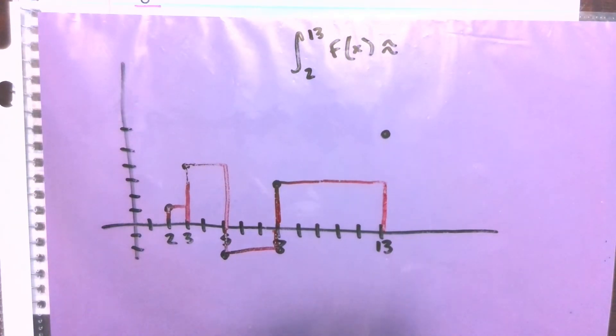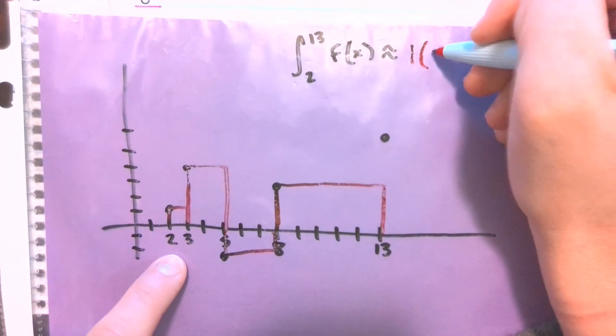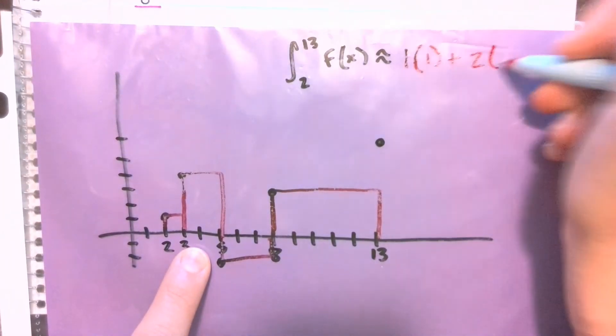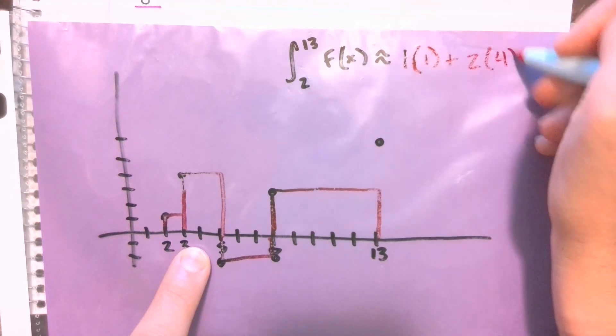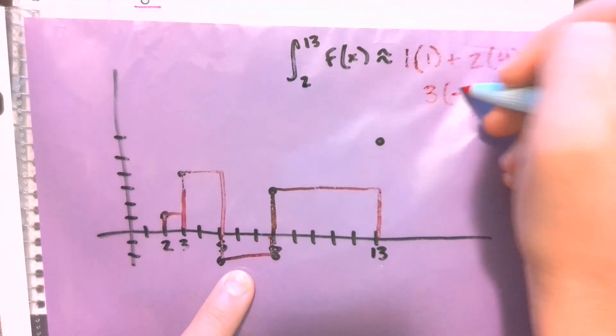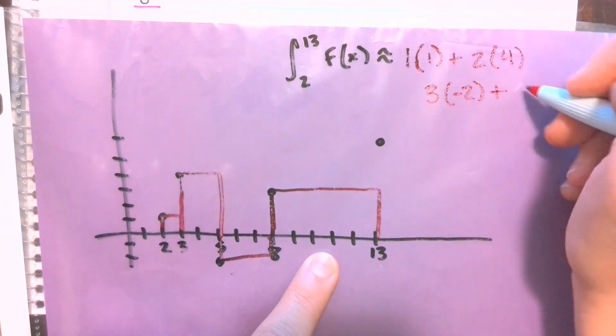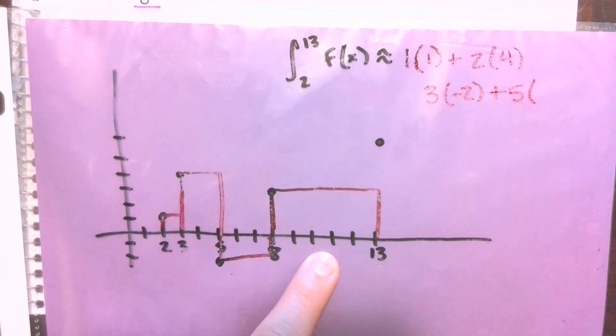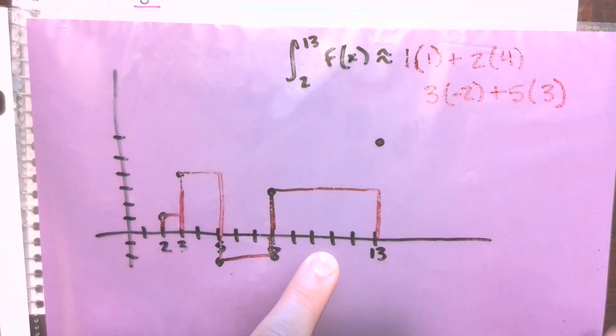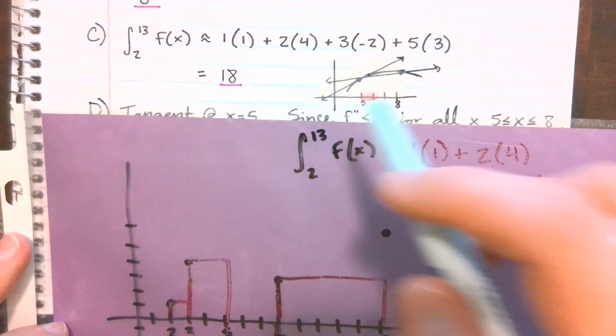So if we're looking at our areas here, we've got 1 with a width of 1 times a height of 1. We've got a width of 2 times a height of 4. We've got a width of 3 times a height of negative 2. So that's where that negative area is going to come from. And then for the last one, a width of 5 times a height of 3. So adding all those together, all of our little areas, we're going to end up with 18.